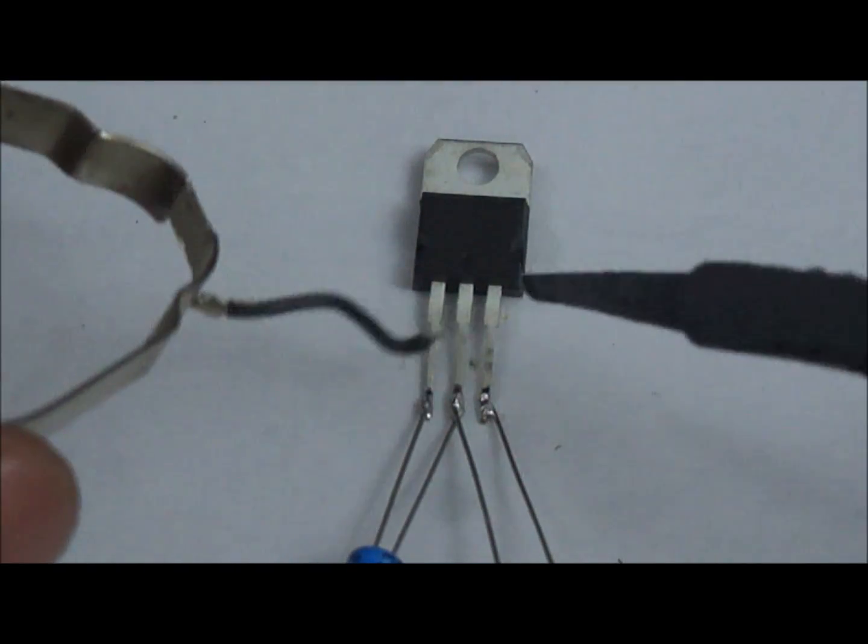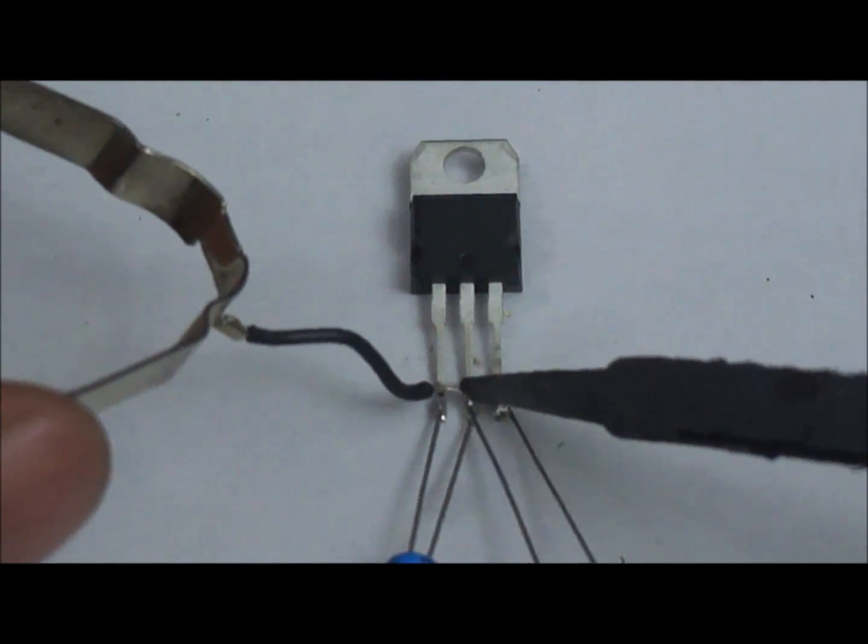We connect the black wire from the side connector to the second pin of the 7805 regulator.